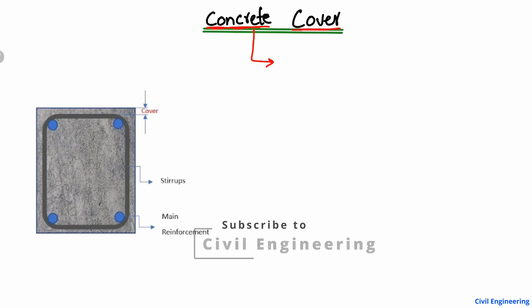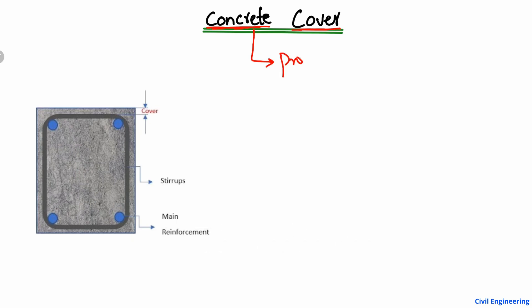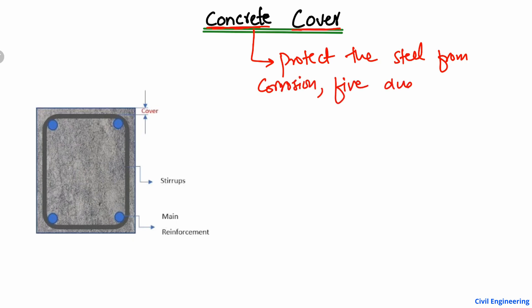Concrete cover is basically provided in any kind of structural element to protect the steel reinforcement bar from corrosion, from fire, and from other kinds of damages. The main purpose of the concrete cover is to prevent the reinforcement bar from corrosion.